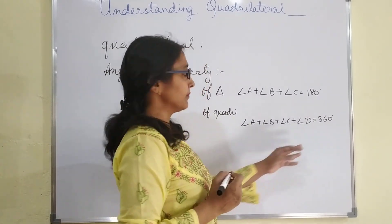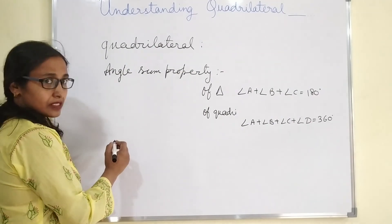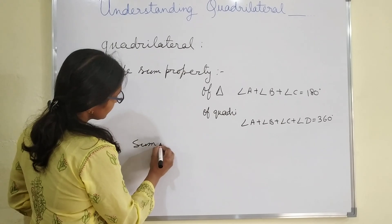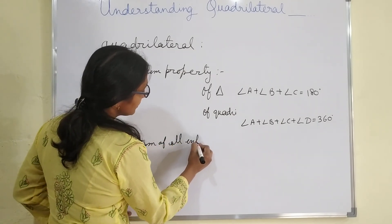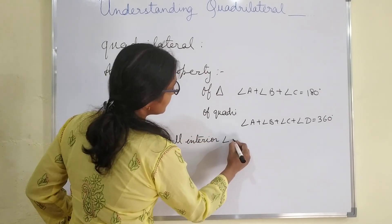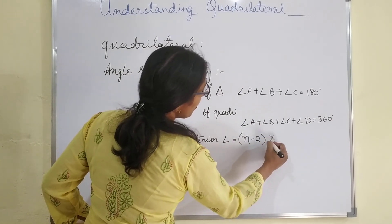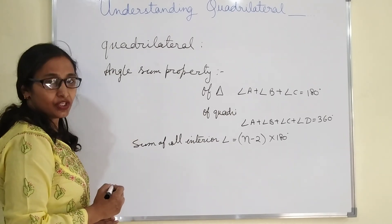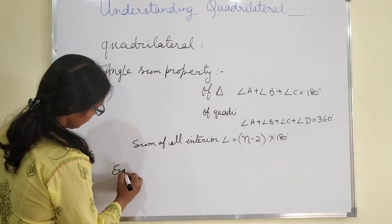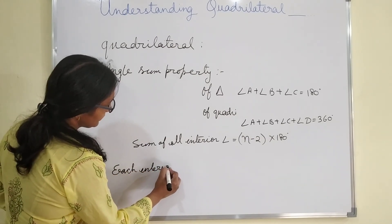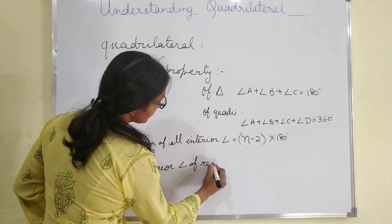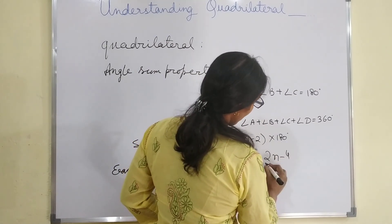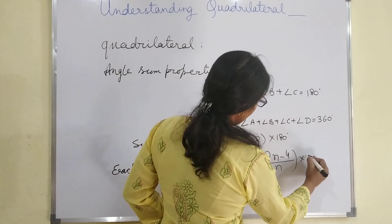The sum of all four angles is 360 degrees. Next is the sum of all interior angles in any n-gon: sum of all interior angles = (N − 2) × 180 degrees. And each interior angle of a regular polygon = (2N − 4) / N × 90 degrees.